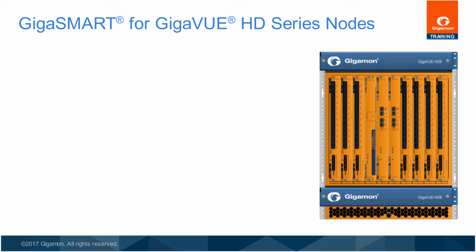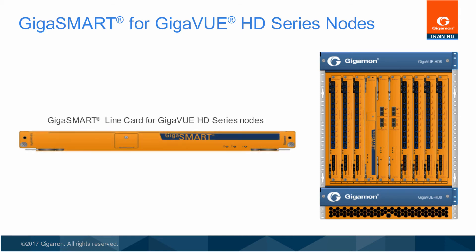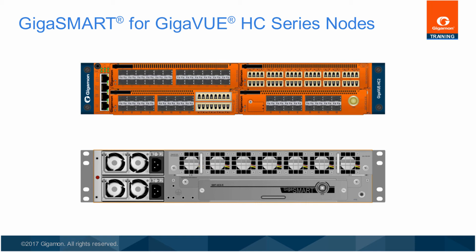GigaSmart software application licenses are available on all GigaView HD series nodes. An optionally available GigaSmart hardware line card is required for these licensed software applications to run on GigaView HD series nodes. The GigaView HD series GigaSmart line card provides two 40-gigabit backplane attachments which may be allocated as required to support all licensed software applications. Multiple GigaSmart hardware line cards can be combined within a single GigaView HD series node to expand capabilities and throughput. Refer to the user documentation for available configurations.